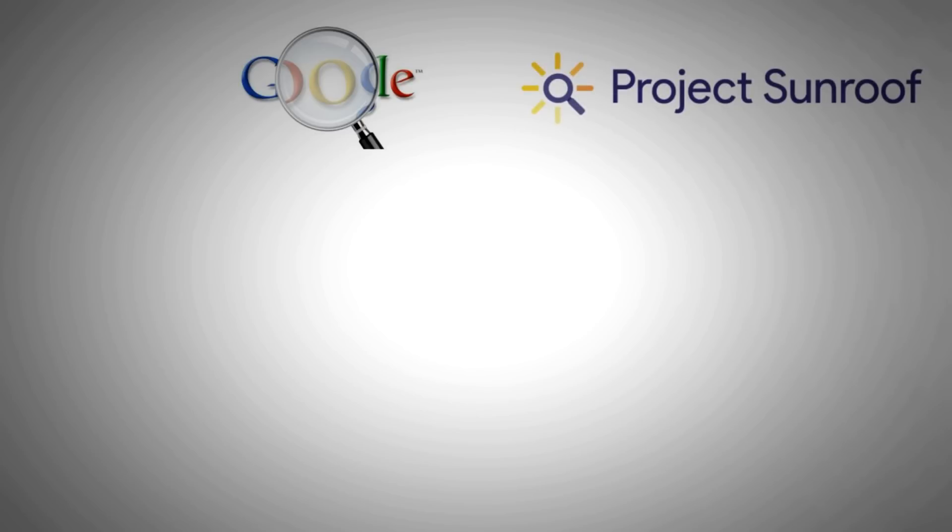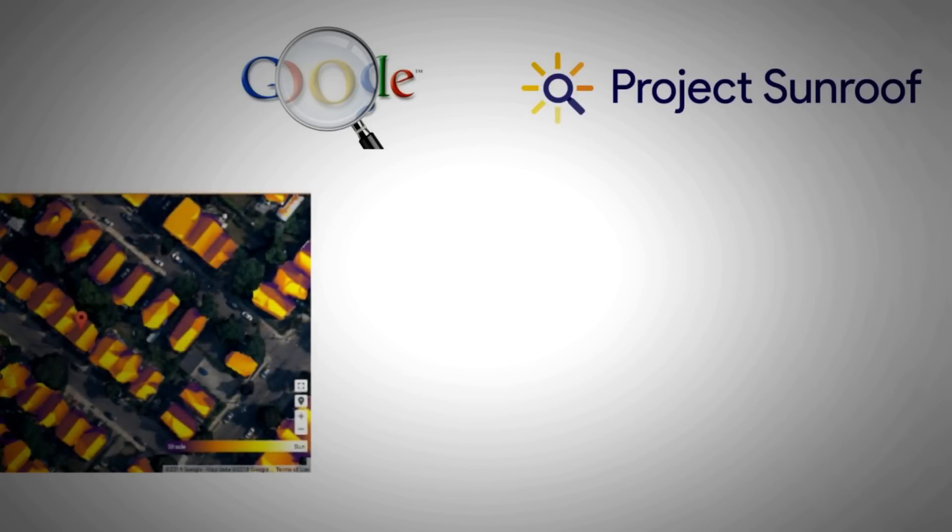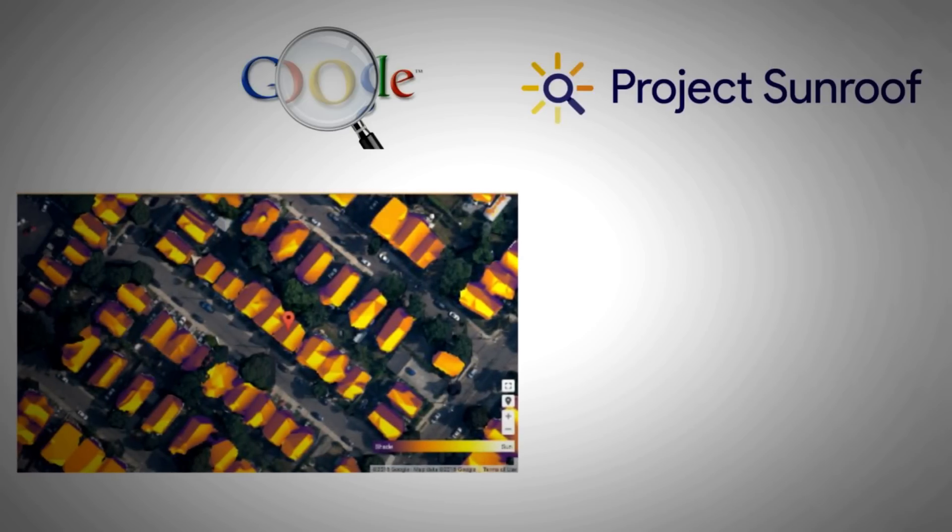Solar resource estimation tools have been available online for more than a decade. However, a breakthrough was made when Google launched its own tool called Project Sunroof in August 2015 that was totally free. It used the data from Google Maps to very accurately estimate the local solar irradiation.